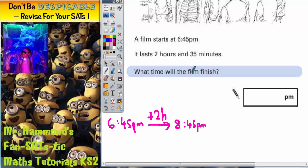Now we need to add on 35 minutes. Now we've got to remember that if we add on 35 to that we're going to get to 80. But there aren't 80 minutes in an hour, there are only 60 minutes in an hour so really we need to be adding on what takes us up to 60.